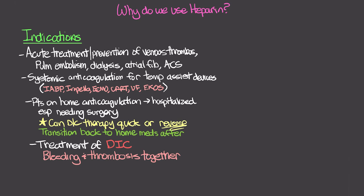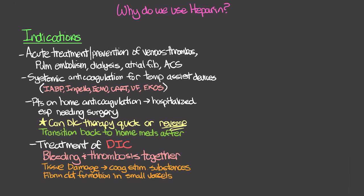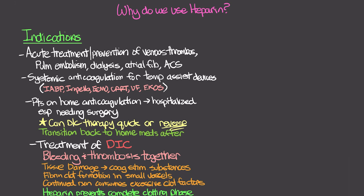Heparin is also used in the treatment of disseminated intravascular coagulation (DIC), a syndrome in which bleeding and thrombosis occur together. Local tissue damage causes release of coagulation-stimulating substances into circulation, stimulating the coagulation process and causing fibrin clot formation in small vessels including lungs, kidneys, and brain. This consumes excessive amounts of fibrinogen, clotting factors, and platelets, ultimately leading to bleeding. Heparin prevents the clotting phase from completing, inhibiting breakdown of fibrinogen and preserving the body's coagulation factor stores.